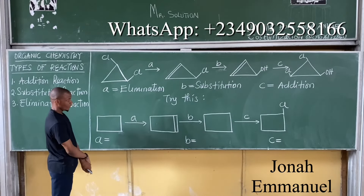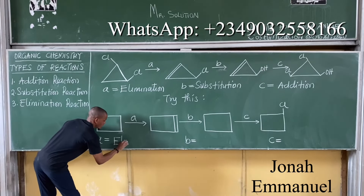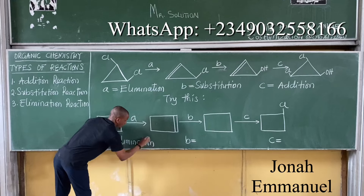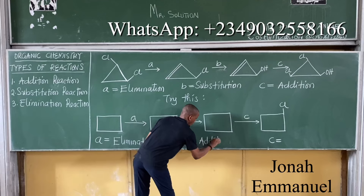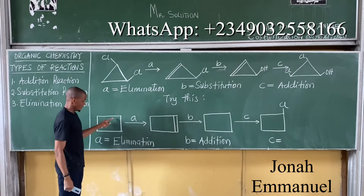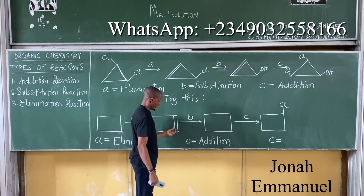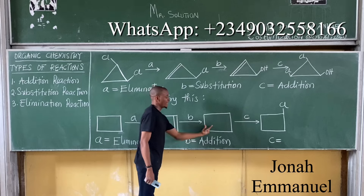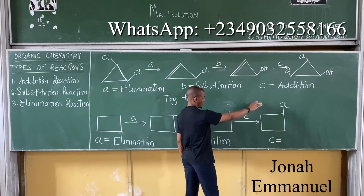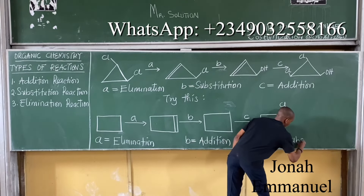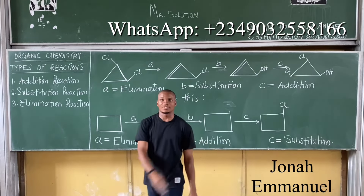Elimination. What is elimination? Elimination — this one is building up from a smaller to a higher structure. That's elimination. Addition is from a higher structure to a lesser structure. This one has a substituent that needs to be replaced by another. That's how it's done.